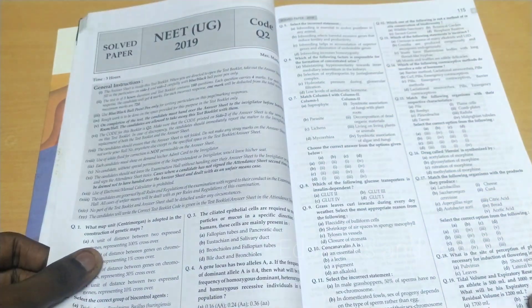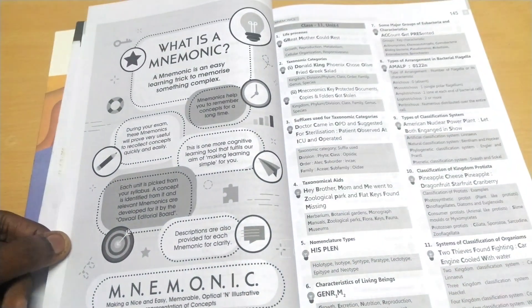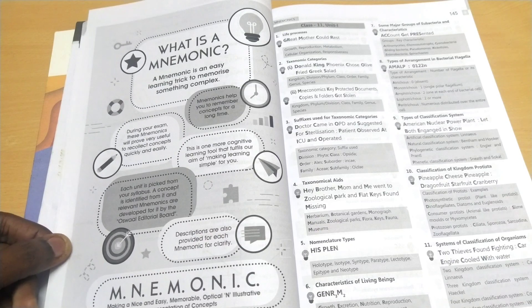Then they've given NEET UG 2019. Up to 2019, they've given the solved papers. After that, they've given mnemonics. What is mnemonics? A mnemonic is an easy learning trick to memorize something complex.